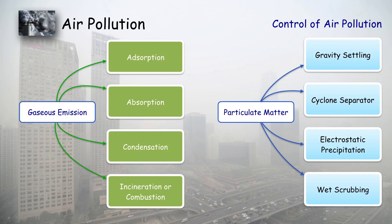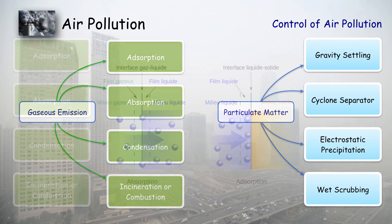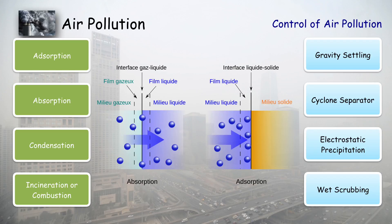Industries generally have two types of emissions: gas emissions and solid particle emissions. For gas emissions there are several methods, and for particulate emissions there are a few more. For gases coming out of an industry, they can go for adsorption, absorption, condensation, or incineration.